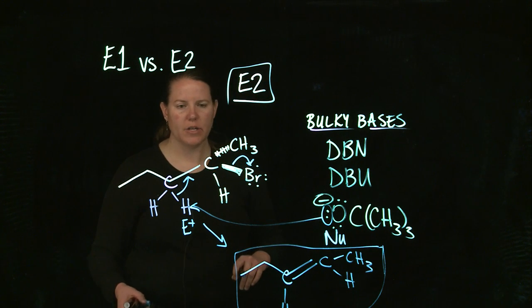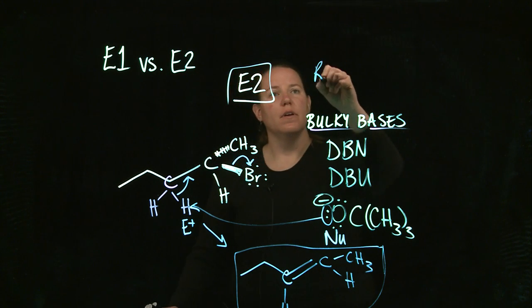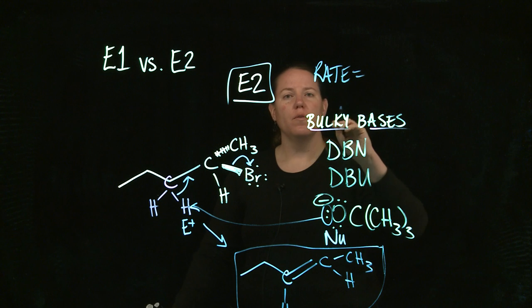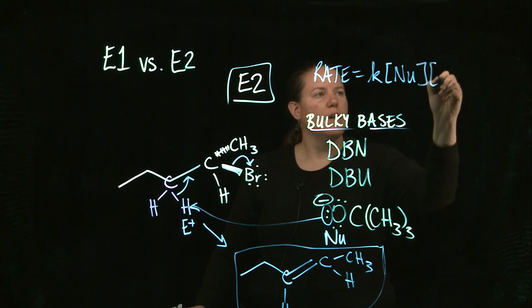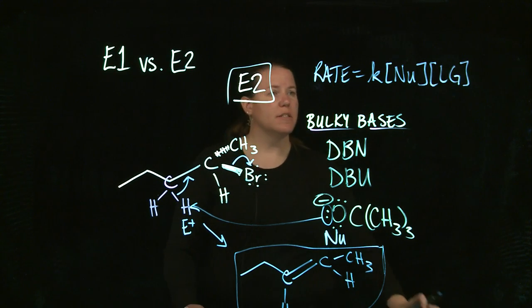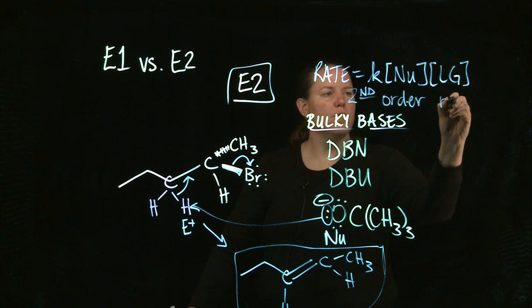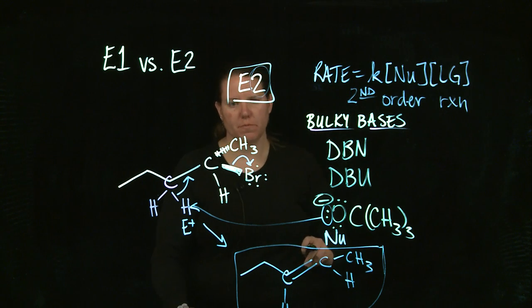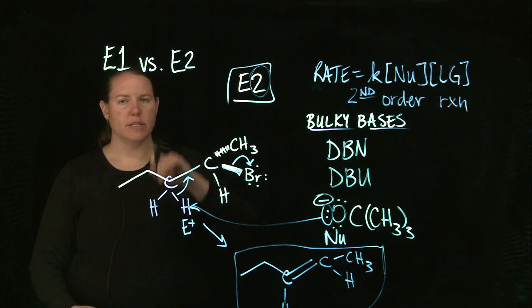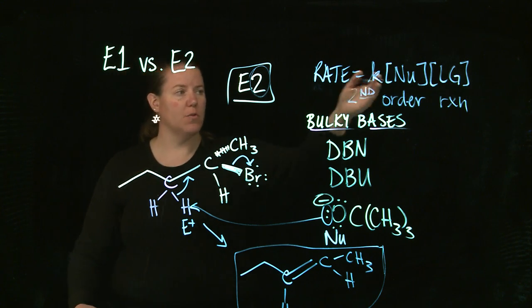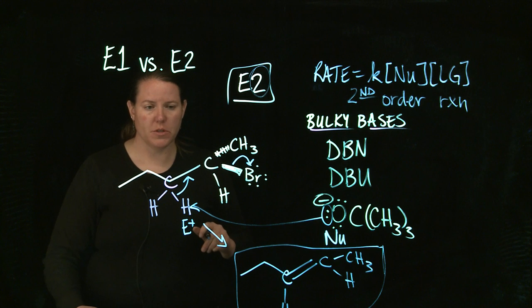And because it depends on the nucleophile and the leaving group, both kind of doing their thing at the same time, the nucleophile has to attack and the leaving group has to leave, then this is second order kinetics. This is a second order reaction, which is where the two comes from. It's an elimination because you have a double bond formed where you didn't have one to begin with. It's a two because of the second order reaction. The fact that there's a one right here and a one right there, and if you add one plus one, it equals two.